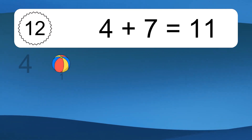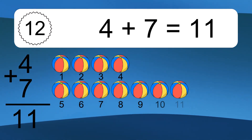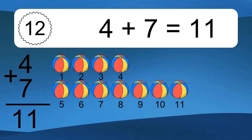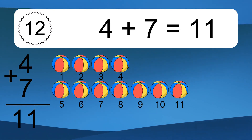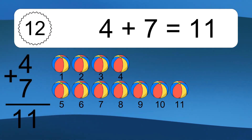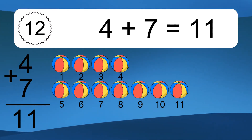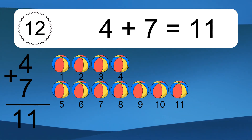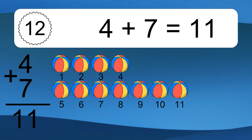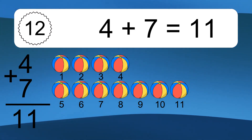4 plus 7 equals what? 4 plus 7 equals 11. Let's count it. 1, 2, 3, 4, 5, 6, 7, 8, 9, 10, 11.